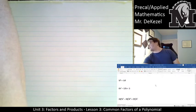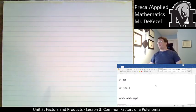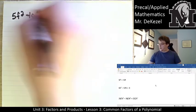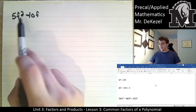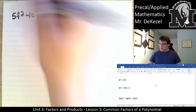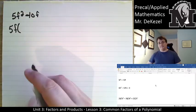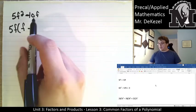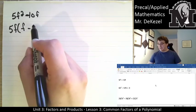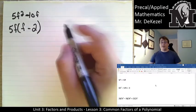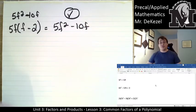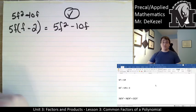Next: 5f squared minus 10f. I can pull out a 5 from the numbers, and there is also one f common between the two terms, so I factor out 5f. What times 5f gets me 5f squared? Just f. What times 5f gets me negative 10f? That's negative 2. So: 5f times (f minus 2). Check: 5f times f is 5f squared, and 5f times minus 2 is minus 10f. That is correct. I highly recommend doing the checks if you're at all unsure.